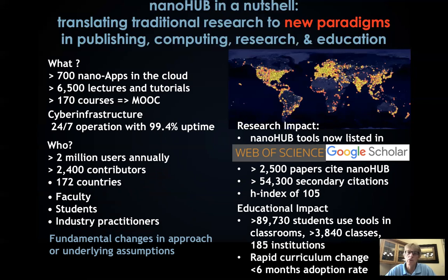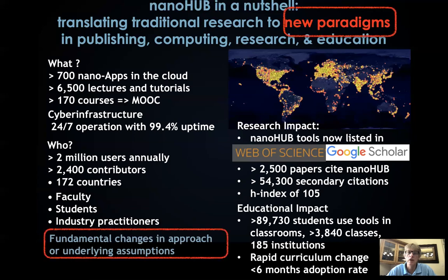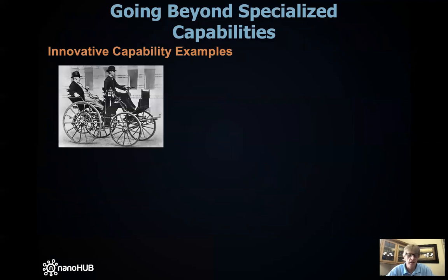We also created a new type of publication — simulation tools that are now listed in the Web of Science. Again, that was not previously feasible or demonstrated. So these I would call new paradigms — to me, these are existence proofs. And we can do much more in other fields of science.